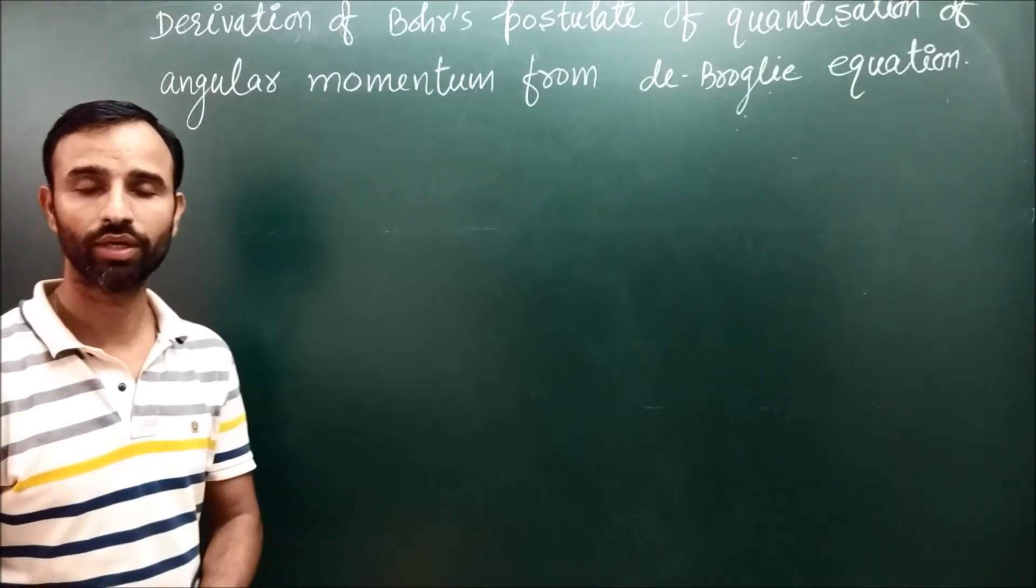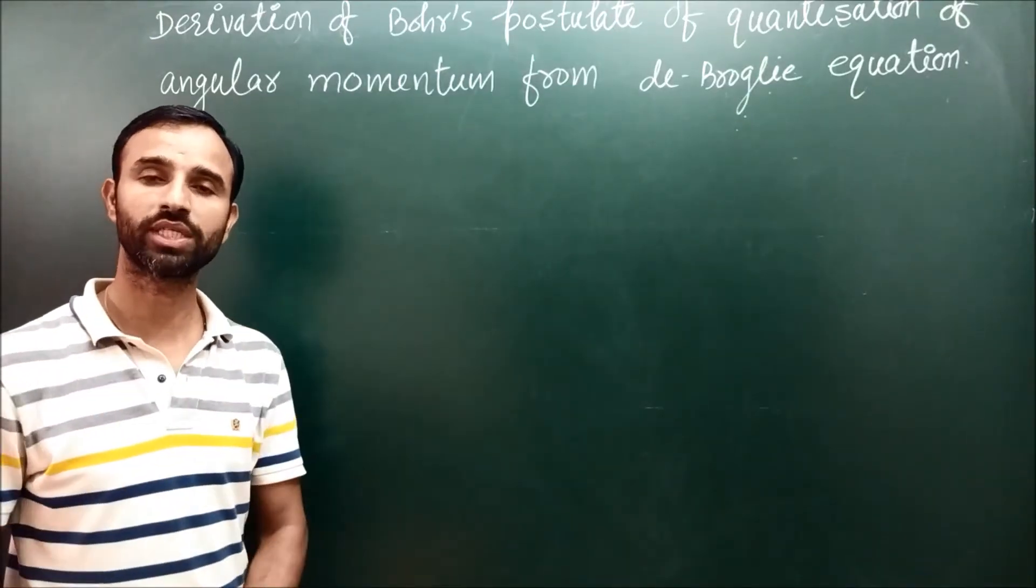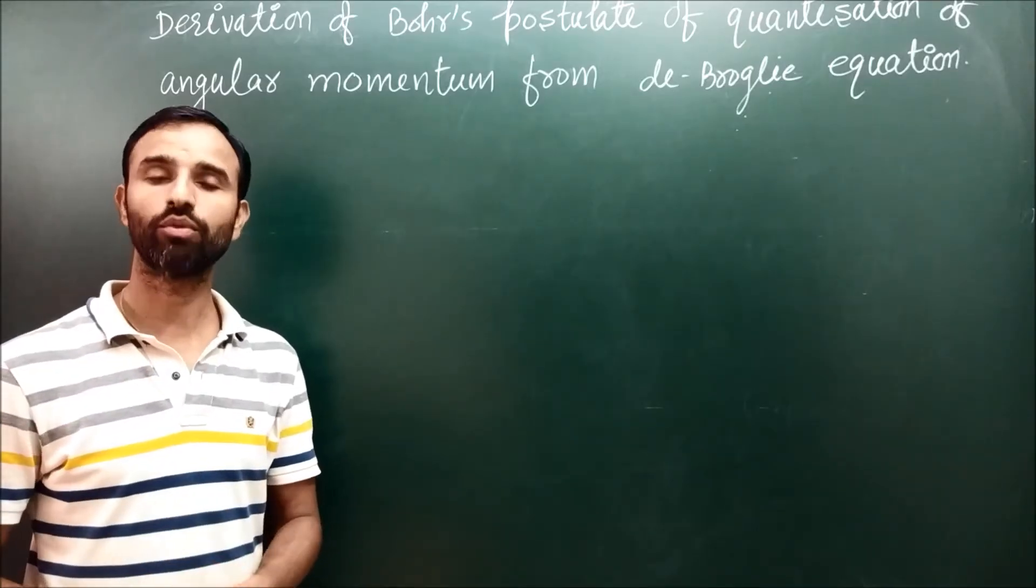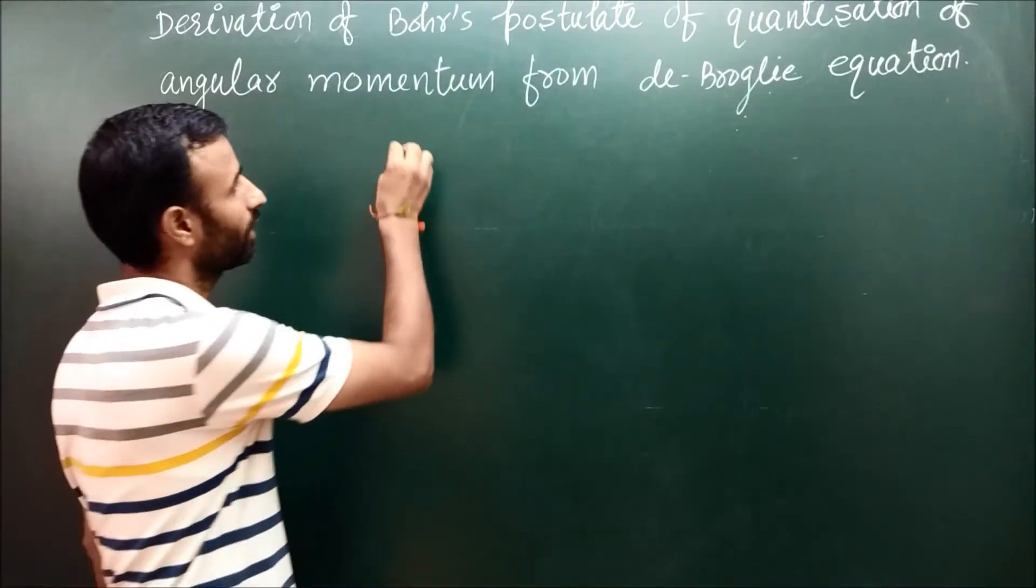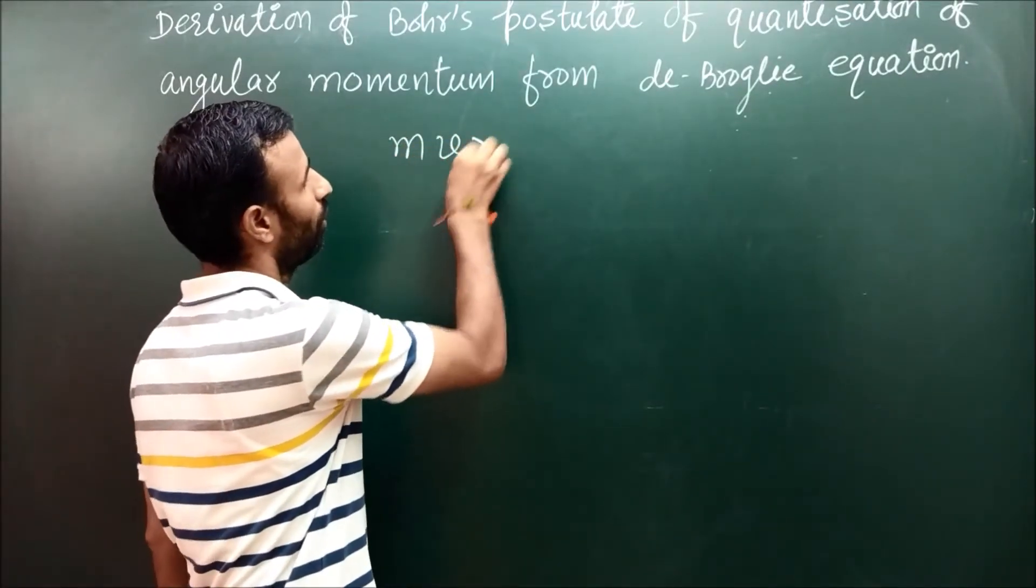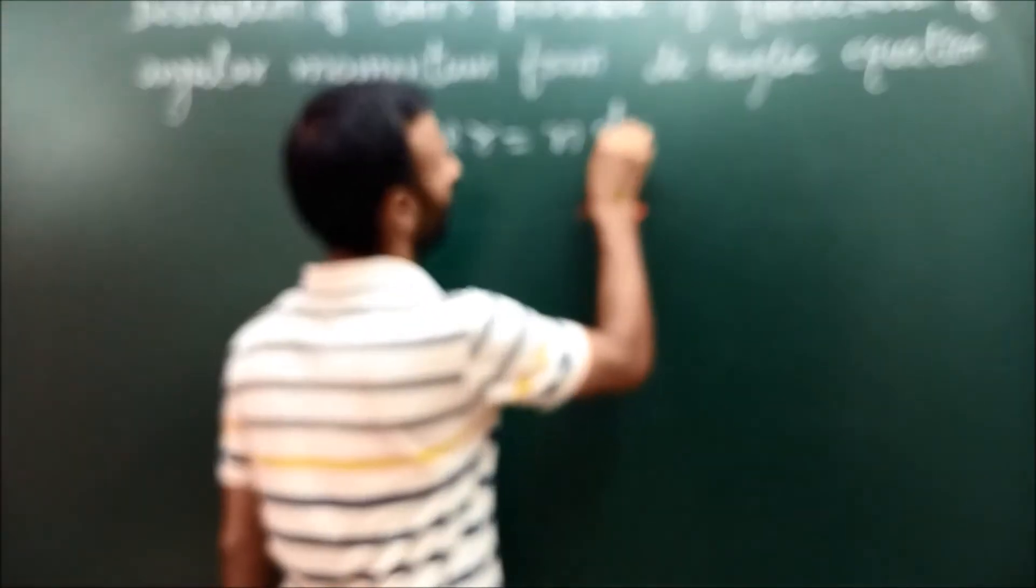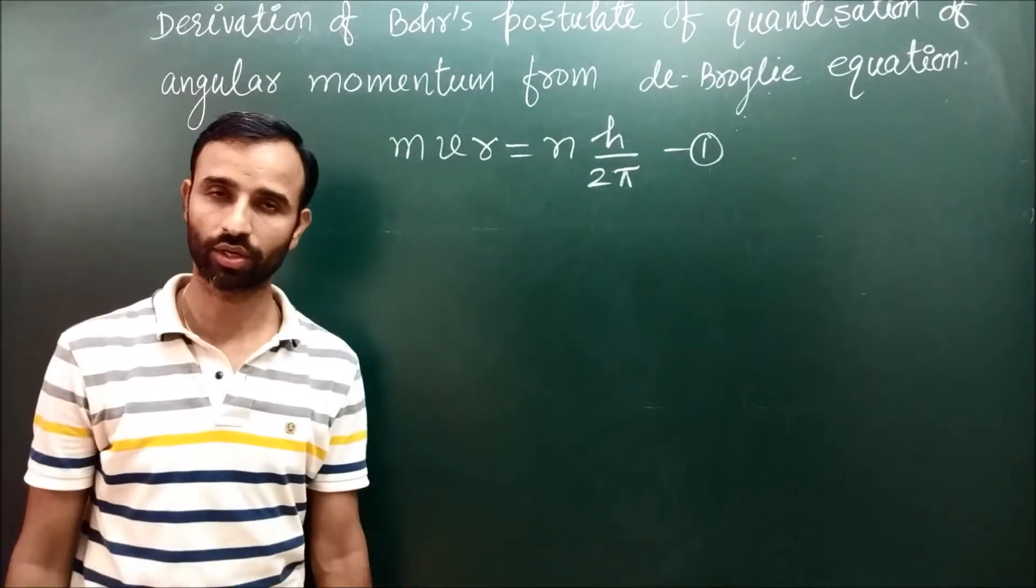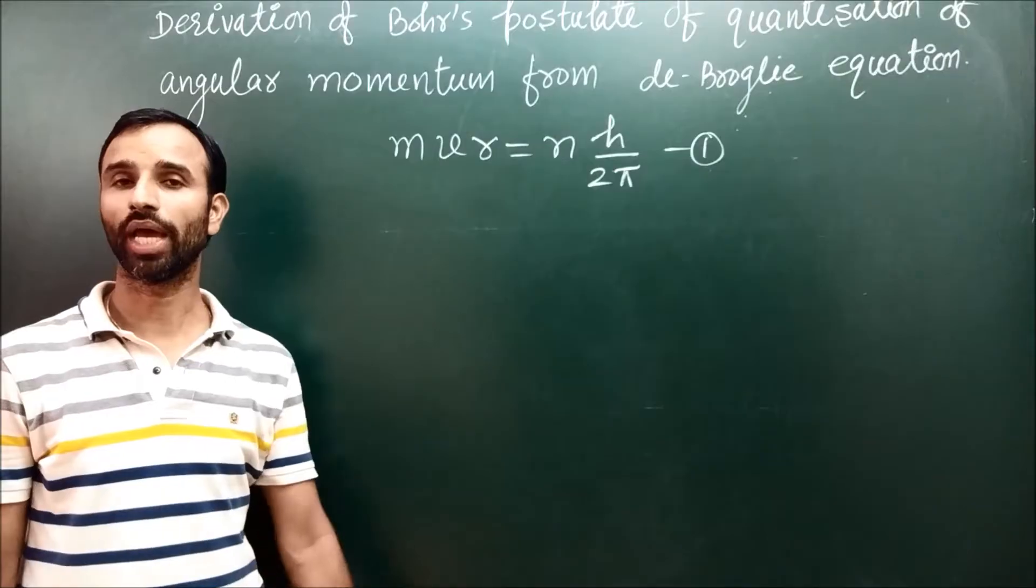According to Bohr postulate, only those orbits are permitted in which angular momentum of the electron is an integral multiple of h upon 2π. This is the Bohr postulate of quantization of angular momentum.